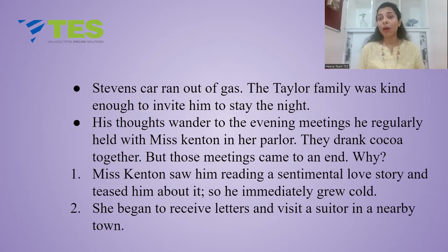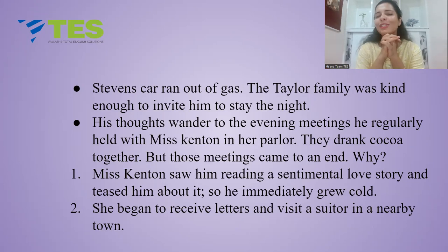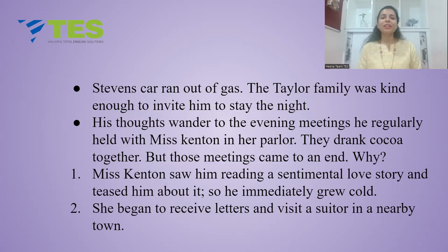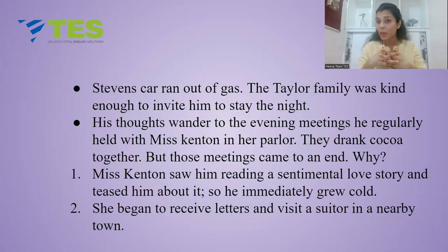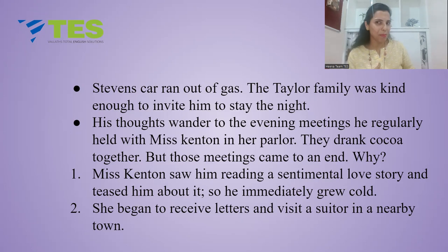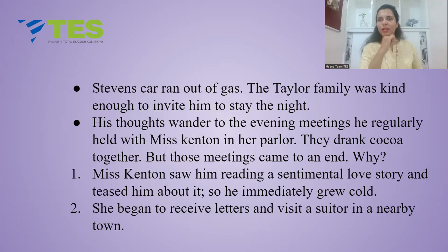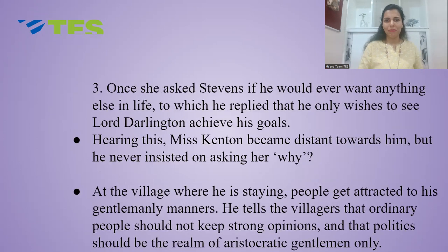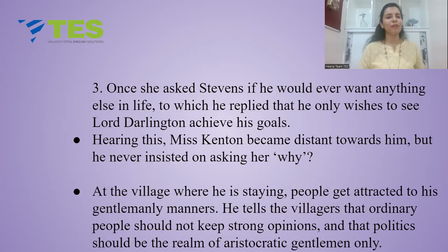Stevens' car runs out of gas. The Taylor family in a village was kind enough to invite him to stay the night. Here, his thoughts wander to the evening meetings he regularly held with Miss Kenton in her parlor, where they drank cocoa together. But those meetings came to an end. First, Miss Kenton once saw him reading a sentimental love story and teased him about it, so Stevens immediately grew cold. Second, she began to receive letters and visit a suitor in the nearby town — she made a boyfriend around this time. Third, once she asked Stevens if he would ever want anything else in life, to which Stevens replied that he only wishes to see Lord Darlington achieve his goals. Hearing this, Miss Kenton became distant towards him, but he never insisted on asking her why.